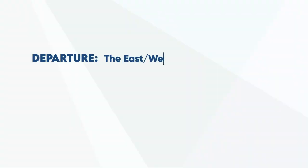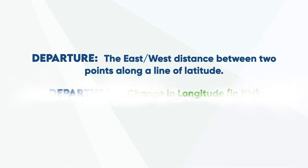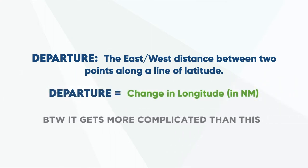Departure - in its most basic form, departure is just measuring the east to west distance between two points along the same line of latitude. In other words, if we're only measuring the east to west or west to east difference, all we need to do is measure the change in longitude between those positions and convert it from degrees into nautical miles.